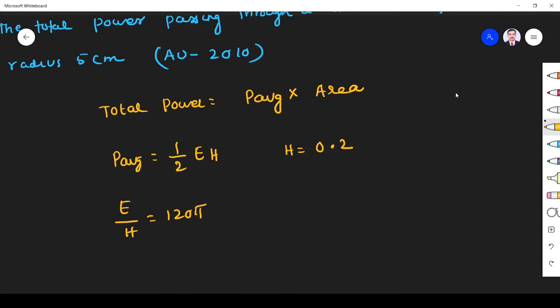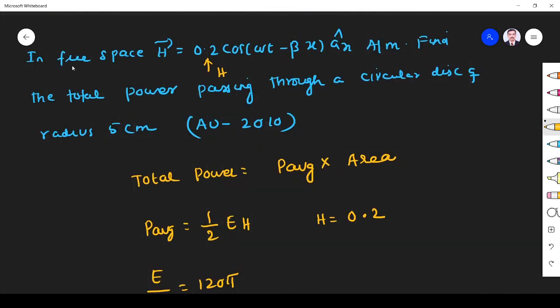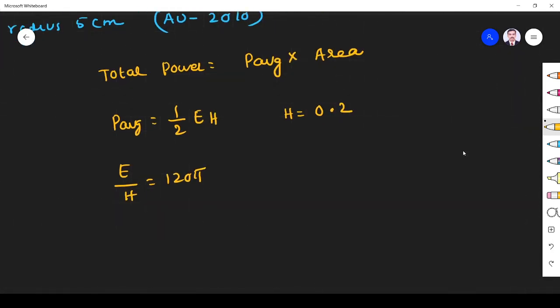It is free space. In free space e by h is equal to 120 pi. h I got it. So this implies e is equal to 120 pi into 0.2. H comes this side. So e equals 120 pi times 0.2. What I get is 75.4 volt per meter.